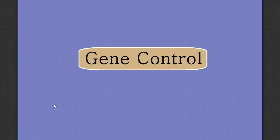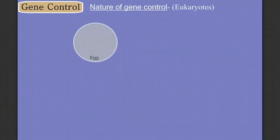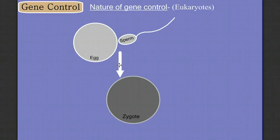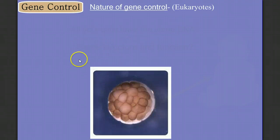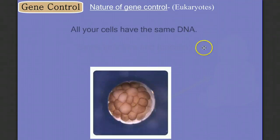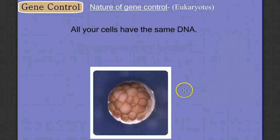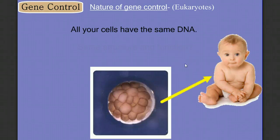Let's start with the nature of gene control in eukaryotes. During sexual reproduction, gametes fuse during fertilization to make a zygote, so we all start as a single cell. Over time, that one cell develops through mitosis and cell division into a ball of cells, and every one of these cells has the exact same genetic content. The question is: if all these cells have the same DNA, do they have the same structure and function?